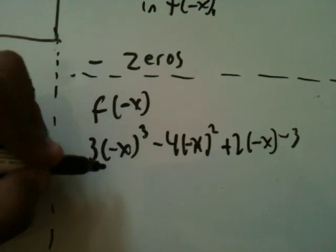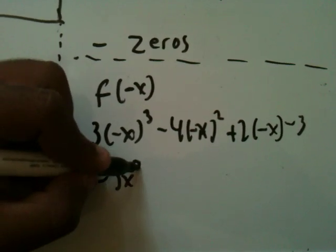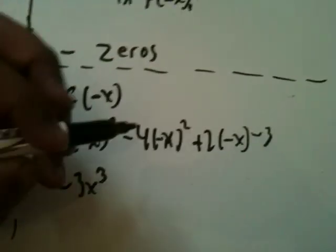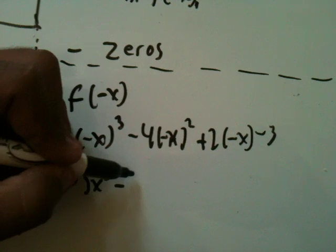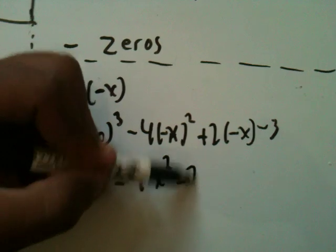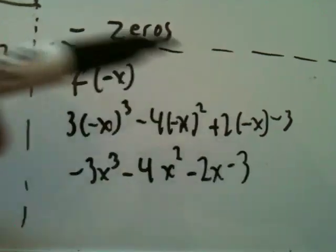And then that's going to be minus 3x cubed, because it's negative, positive, negative. Minus 4x squared minus 2x minus 3.